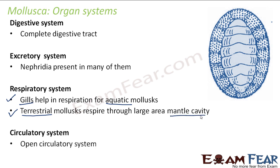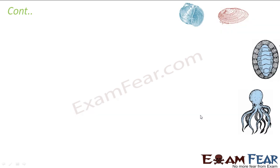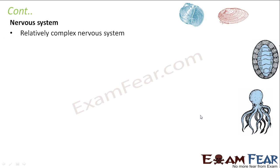Circulatory system: they have an open circulatory system, so no blood vessels are involved. Coming to the nervous system: they have a relatively complex nervous system, because as we reach higher phyla, the complexity increases, and so the complexity of the different systems is also increasing.